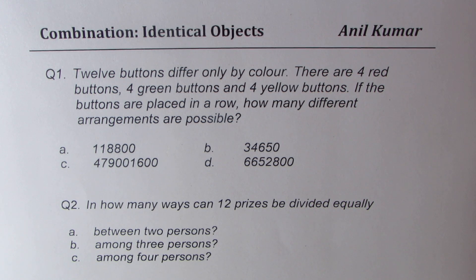Four choices are given to you. Question number two. In how many ways can twelve prizes be divided equally between two persons, among three persons, among four persons? You can pause the video, answer the question, and then look into my suggestions.